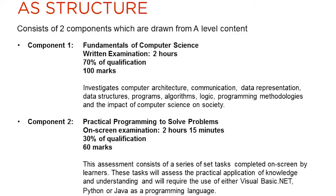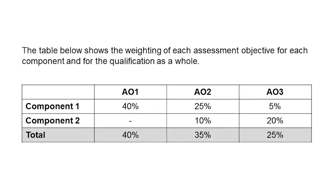The AS content is drawn from Components 1 and 2 at A-Level, with elements of Component 2 at AS drawn from Components 1, 2 and 3 at A-Level. Clearly, there is an increased emphasis on AO1 at AS, but an ability to design, program and evaluate at AO3 is still a key requirement.